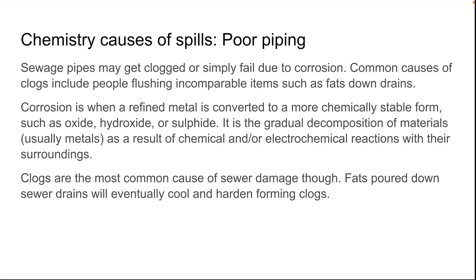Regarding the chemistry behind corrosion: corrosion is when a refined metal is converted to a more chemically stable form, such as oxide, hydroxide, or sulfide. It is the gradual decomposition of materials, typically metals, as a result of chemical and/or electrochemical reactions with their surroundings.